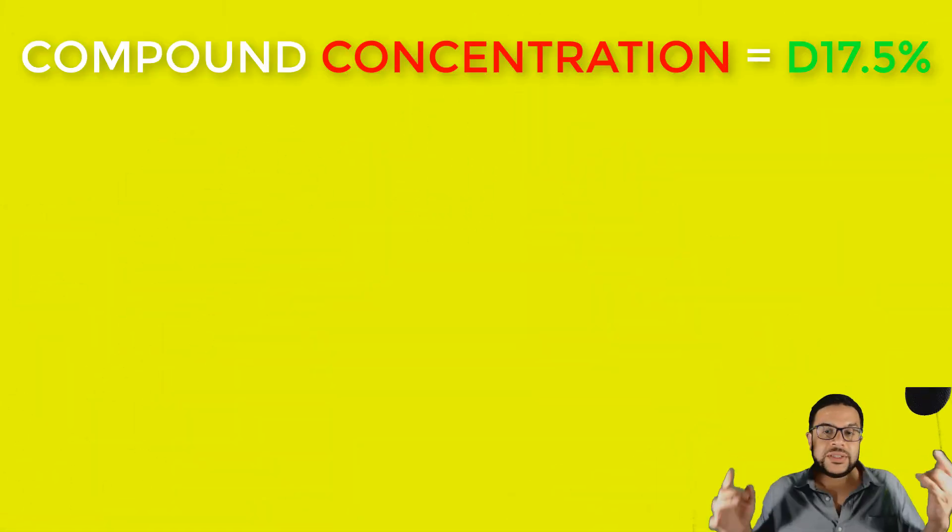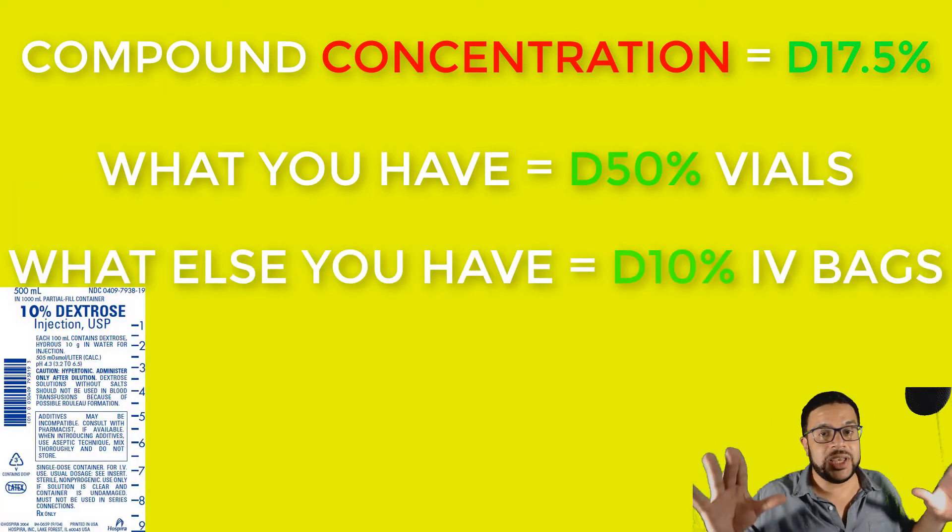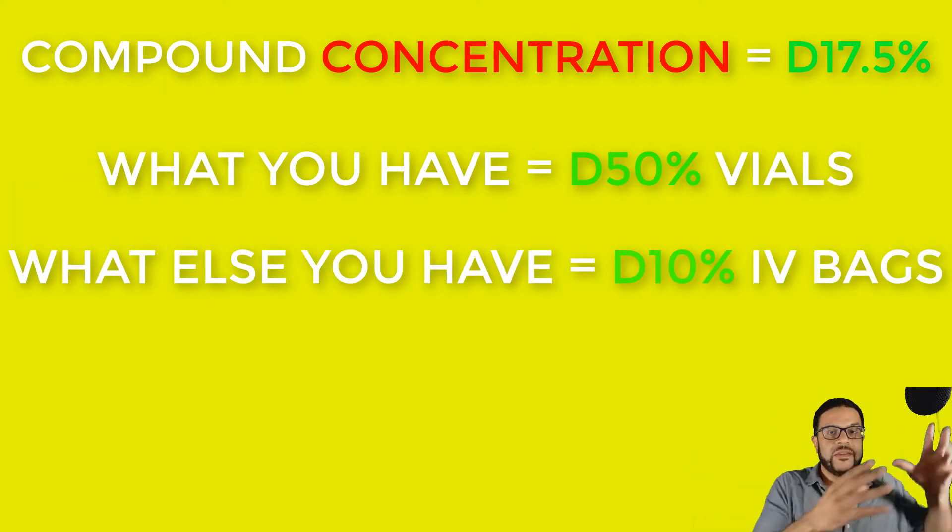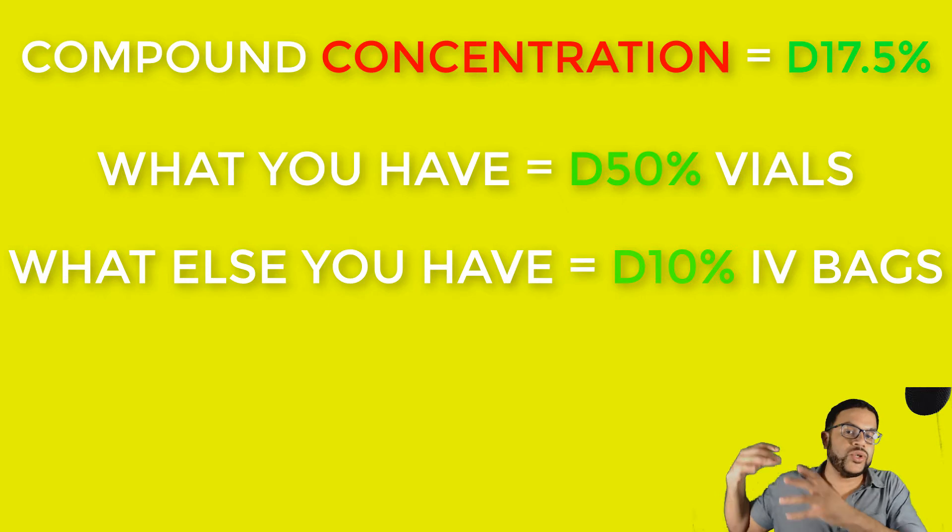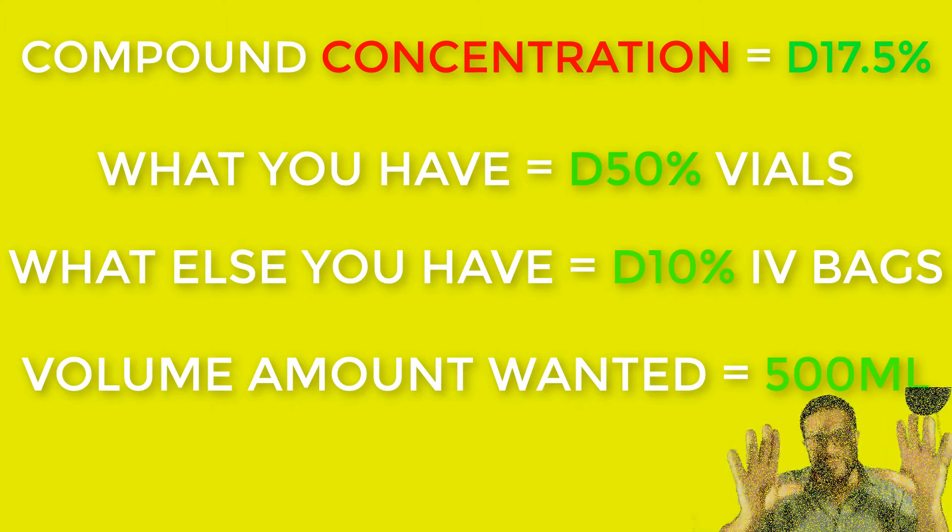For this alligation problem, for all alligations, you need four numbers, four pieces, four bits of information. Remember that. So you're going to work with Dextrose 17.5% because that's what you need. Then you have the vials, the Dextrose 50% vials. Then the other ingredient, you have Dextrose 10% bag. So you're going to have to use a combination of the Dextrose 50% plus the Dextrose 10% and then you need the volume that you want to make. What is the doctor ordering? Is he ordering 500 mls, 1,000 mls? So in this case, he's ordering 500 mls.